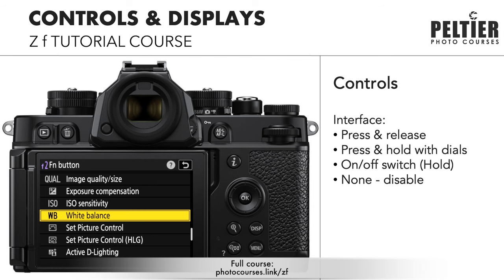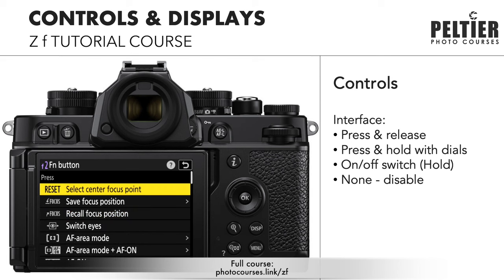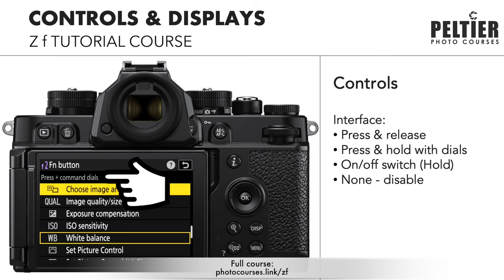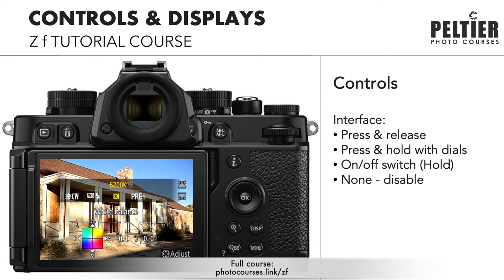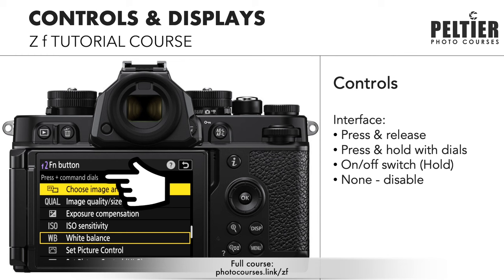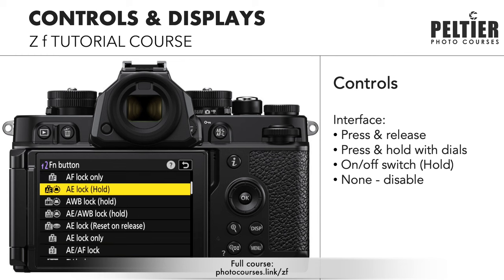There are some things to note when programming your controls. Some functions act as a press-and-release button, while others act as press-and-hold and then use the command dial to change that function — like white balance, where you press and hold the button and then use the command dial. These functions are grouped in the list so you know which ones are press-and-release and which ones require the command dial. Some functions are press to turn on and press again to turn off — these are indicated by 'hold' next to the function name. 'Hold' does not mean you need to press and hold; it means pressing and releasing will hold that function until you press and release it again.